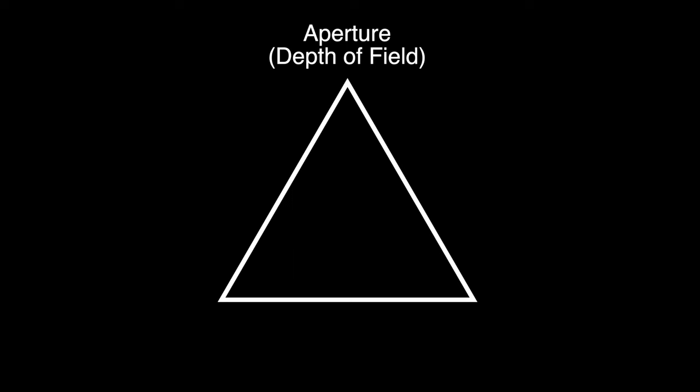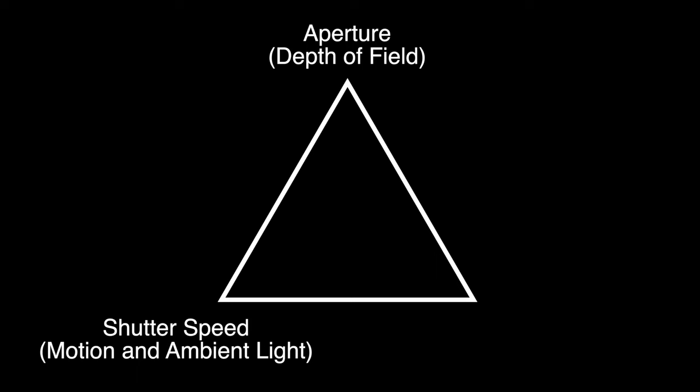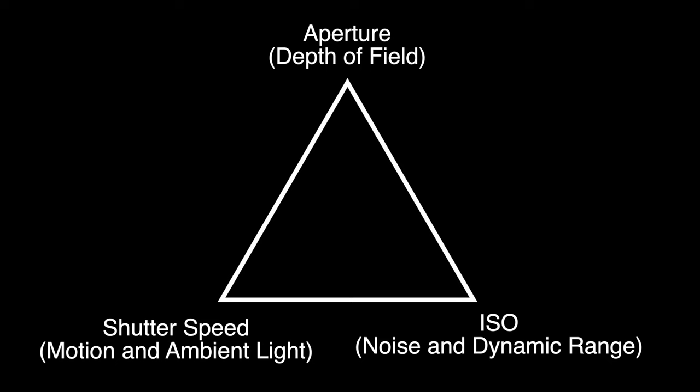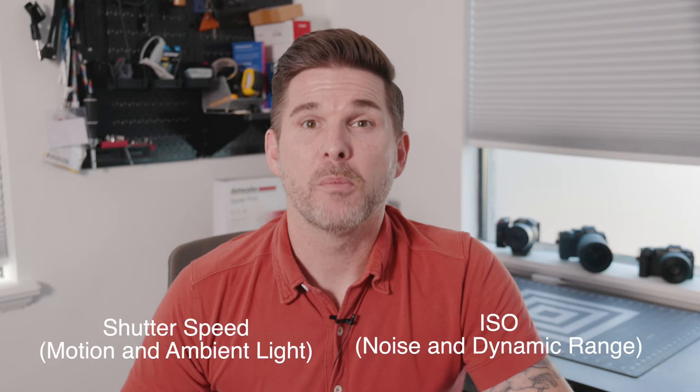This leaves me with three main settings in the exposure triangle: aperture, shutter speed, and ISO. Each one of these settings affects how light or dark the image is. Since they all affect the brightness, I choose the camera settings I use based on the secondary effect each setting has. Aperture changes the depth of field. Shutter speed affects motion in the image and can control how much ambient light gets in. ISO affects the noise level and dynamic range.